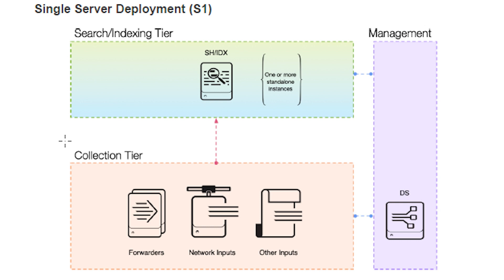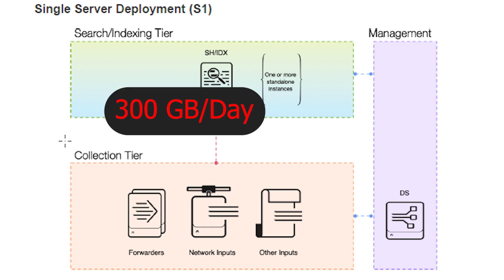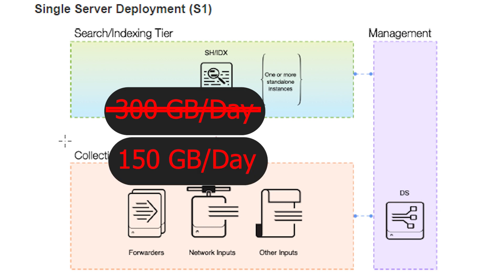This single server SVA is also limited in its capacity to ingest data. Splunk says it can handle about 300 gigs a day, but that honestly sounds like a made-up number. I would put the number closer to 150 gigs a day, just to be safe. It is, however, a really simple deployment with very low overhead.